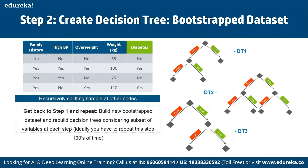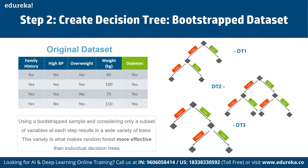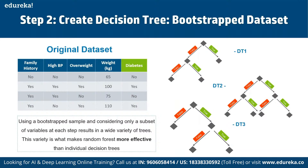We go back to step one and repeat the process: build new bootstrap data sets and rebuild decision trees, considering a subset of variables at each step. Ideally, we repeat this hundreds of times. Creating multiple decision trees from bootstrap samples and using a subset of variables at each step results in a wide variety of trees. This variety is what makes random forest more effective than individual decision trees.